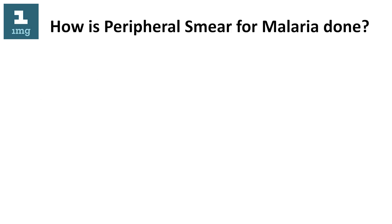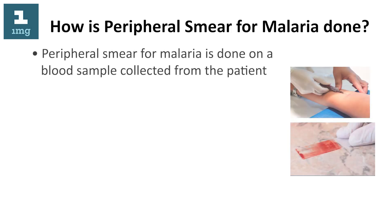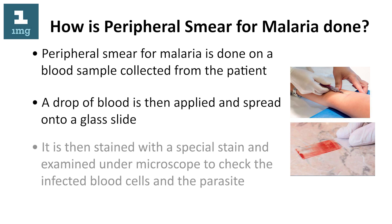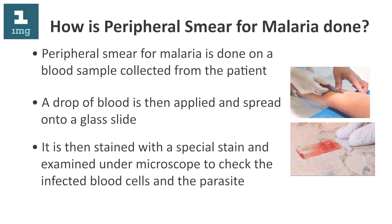How is a peripheral smear for malaria done? The peripheral smear for malaria is done on a blood sample collected from the patient. A drop of blood is then applied and spread onto a glass slide. It is then stained with a special stain and examined under a microscope to check the infected blood cells and the parasite.